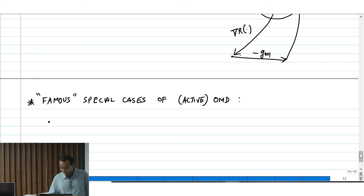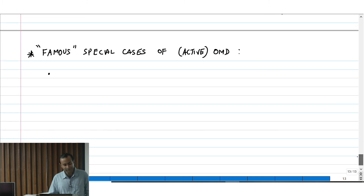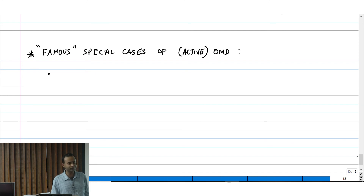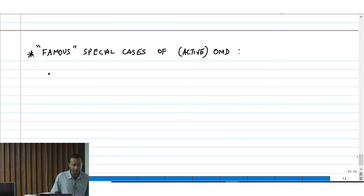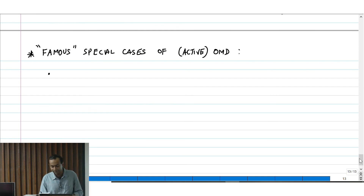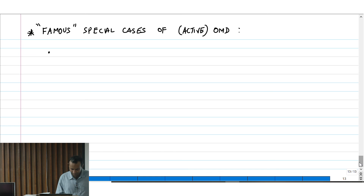In general there are only two special cases of mirror descent algorithms. One is with the very special Euclidean regularizer, which gives you a nice self-dual structure in the dual and primal space because the L2 norm is its own dual. The other one is basically the negative entropy. We will detail both of these.